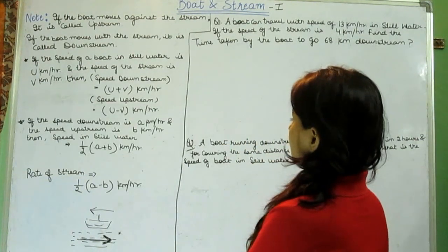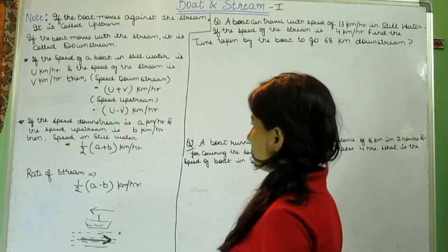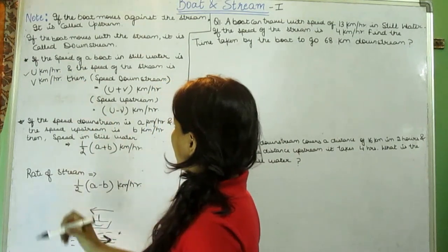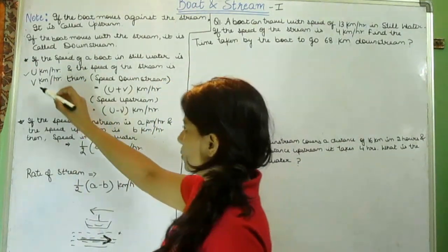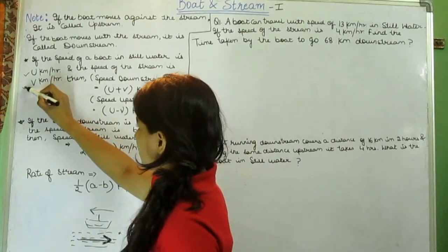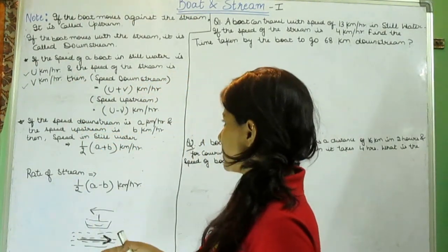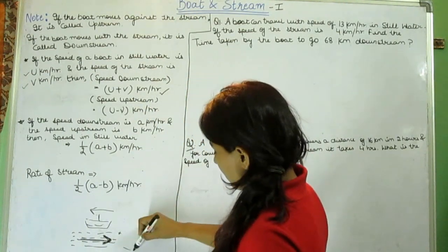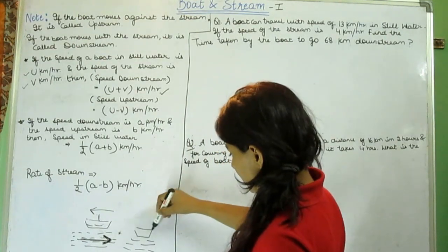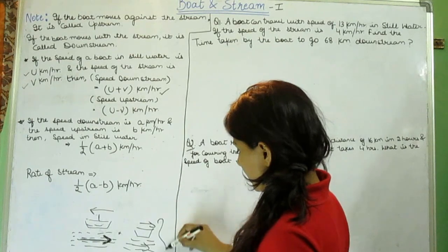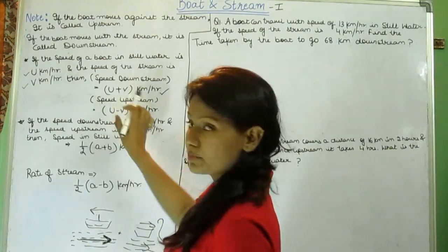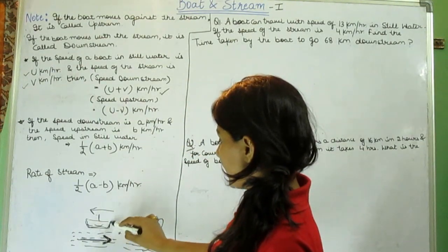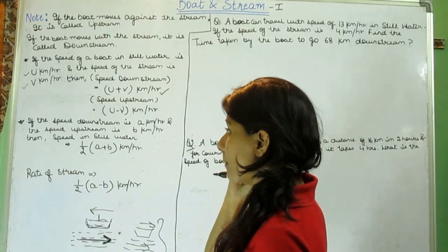The second note is, if the speed of a boat in still water we put it as u, the speed of boat in still water is u km/hr and the speed of stream is v km/hr, then the speed downstream is u plus v km/hr because water is flowing and boat is flowing in the same direction, so they take less time. So we add the speed of boat, and when it goes upstream against the opposite side, then we take u minus v.